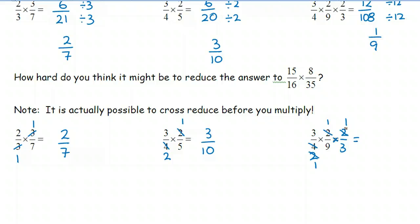And this is a lot simpler now if we were to multiply it out. But it's not complete because this three here in the numerator can cross-reduce with either the nine or the three in the denominator.